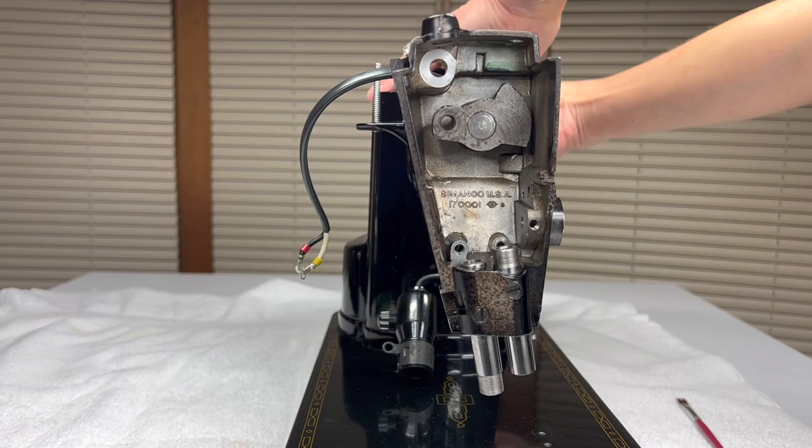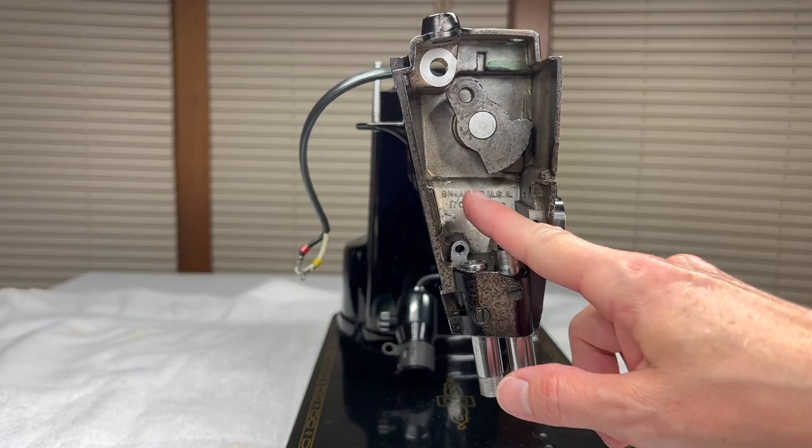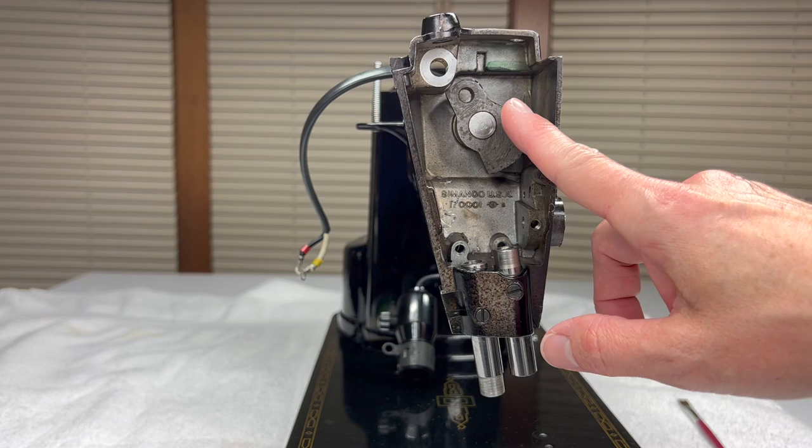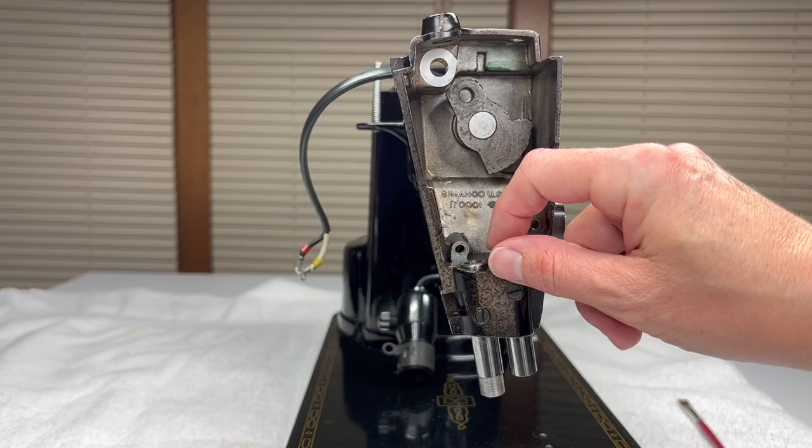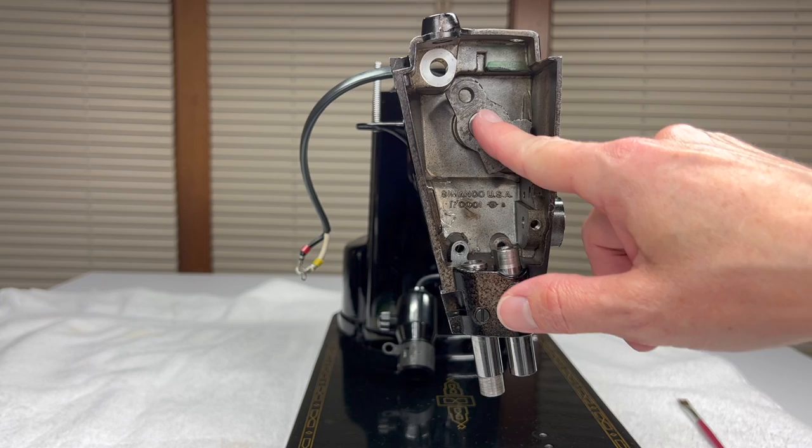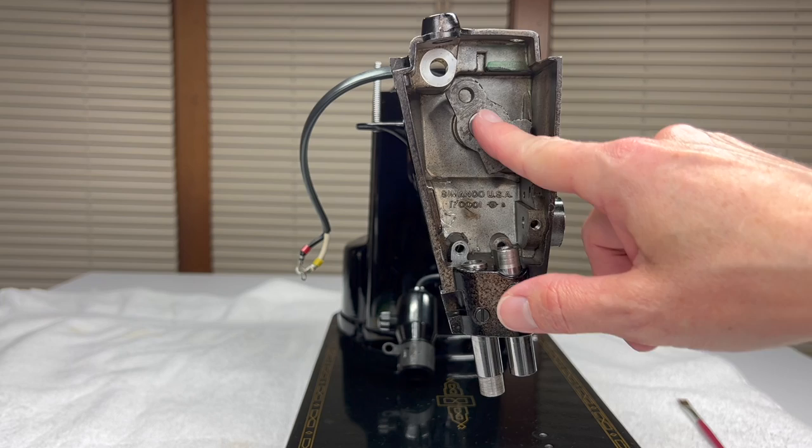That's it. The hand wheel's on. Now we can start adding in the parts of the nose. So we will add our thread take up and our needle bar and our presser bar and we will go ahead and start adding this thread take up next. So told you it was going to be short and sweet.